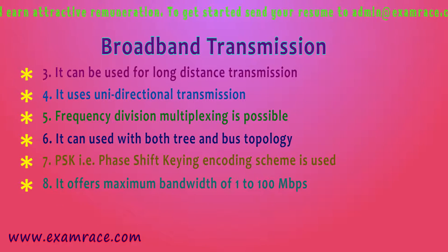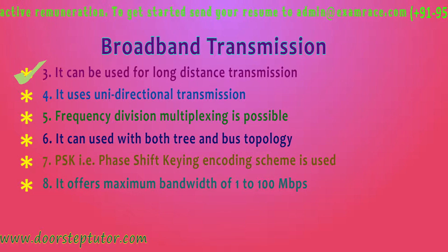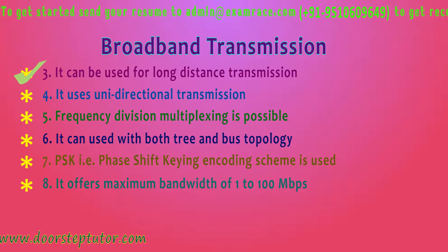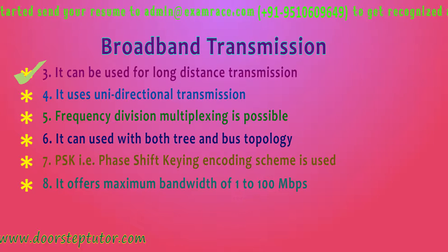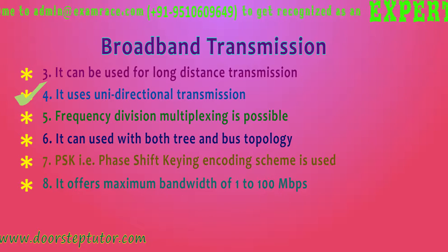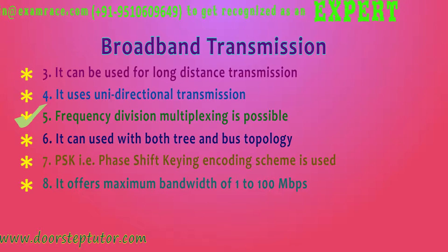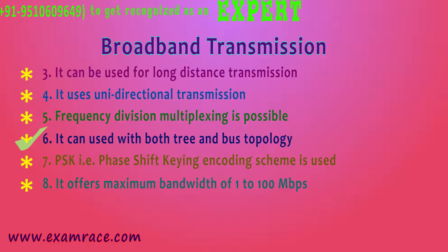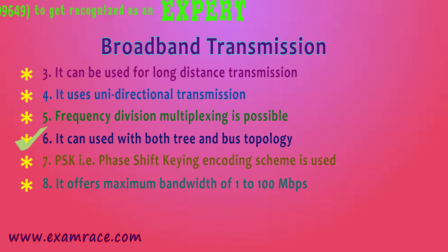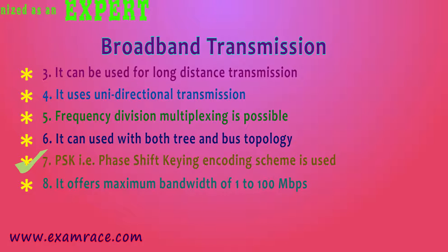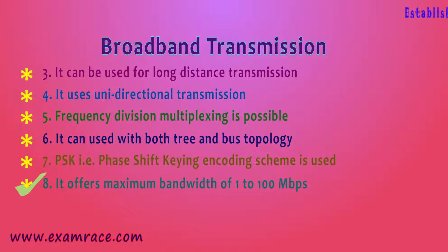The other characteristics of broadband are: it can be used for long distance transmission — unlike baseband which was for short distance, broadband can be used for long distance. It uses unidirectional transmission. Frequency division multiplexing is possible because we are working on various frequencies and various signals at a time. It can be used with both tree and bus topology. It works upon the phase shift keying encoding scheme. It offers a maximum bandwidth of 1 to 100 Mbps.